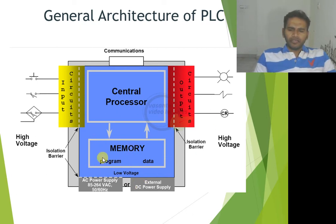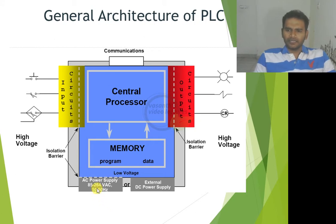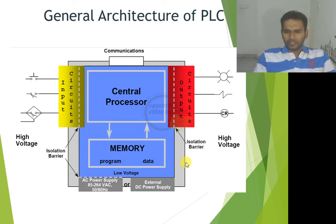Internally the PLC has program memory — whatever program executes uses this program memory — and data memory where data values from sensors are stored. All these things are put onto a single system-on-chip that becomes your PLC. It is always essential for the entire PLC unit to have a redundant supply, so that whenever the mains goes off the PLC retains its data values. When external power shuts down the PLC should not lose its data values, so there is an uninterrupted power supply for the PLC.